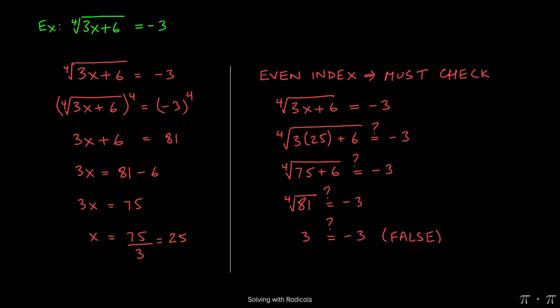So anytime you check the number that you get at the end of the equation, in the original equation, and you get a false statement, like we do right here, that number is not a solution. In some contexts, it might be called an extraneous solution or a false solution. For our purposes, we're just going to say that x equals 25 is not a solution, because we were not able to plug it into the original equation and get a true statement.